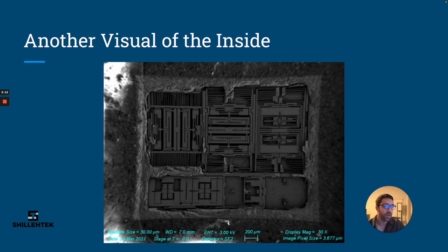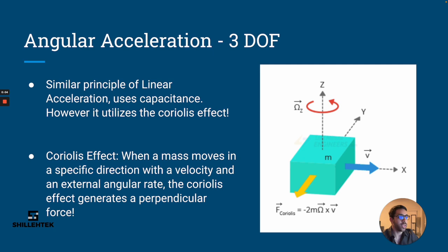After all that, you may be wondering: how do we get the angular acceleration values? Well, it works on a similar premise. It does use capacitance - a measurable capacitance which is then translated to acceleration. However, in addition to that, it utilizes the Coriolis effect to generate a force to induce the capacitance in the first place.